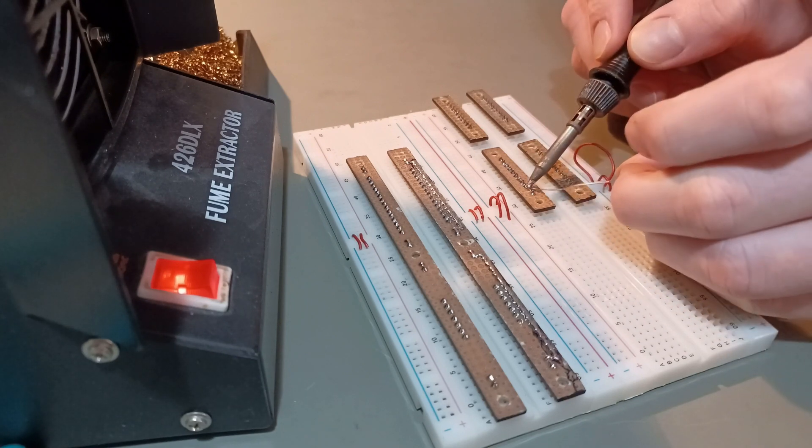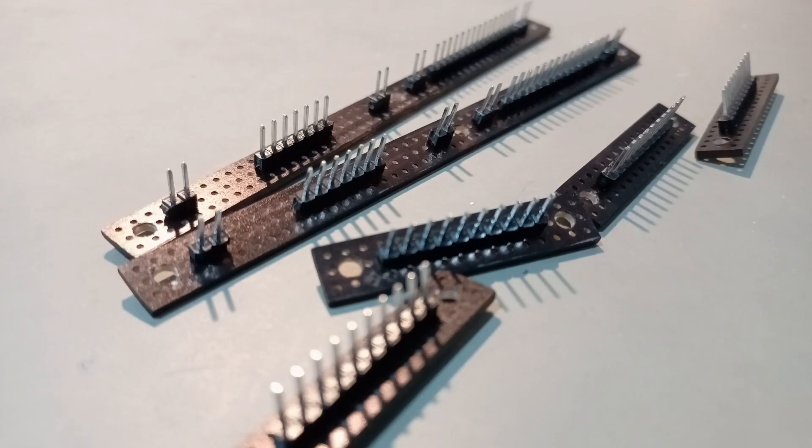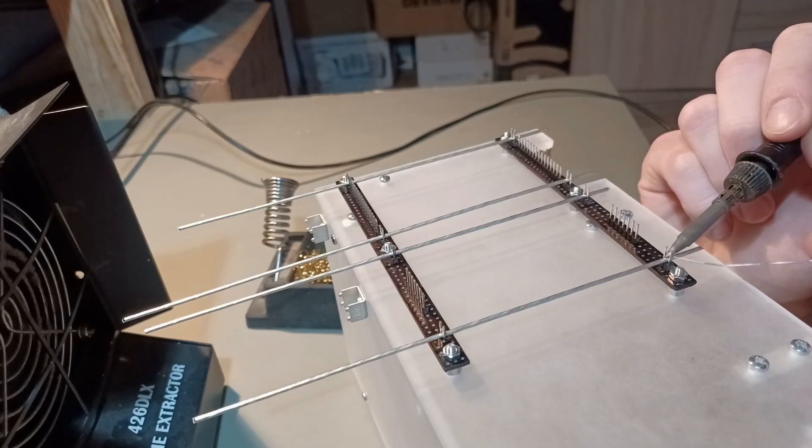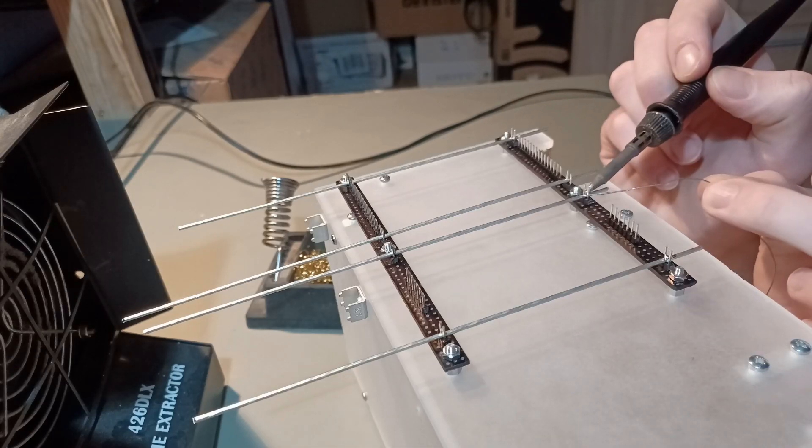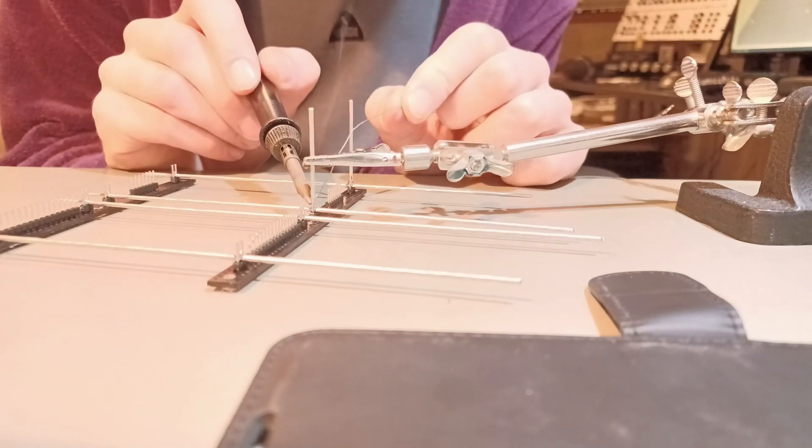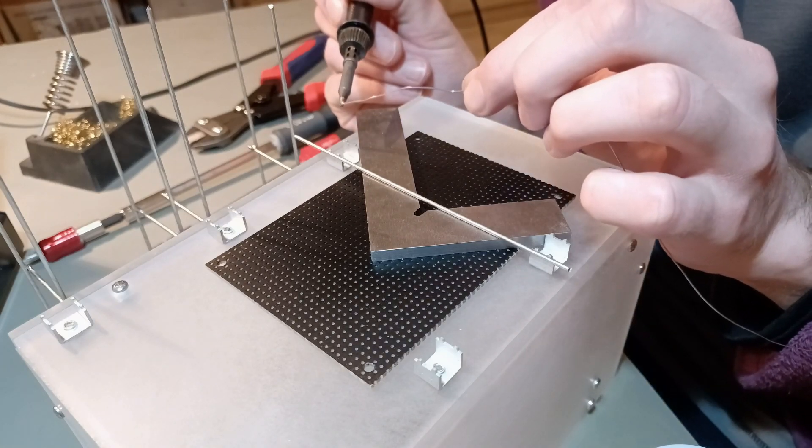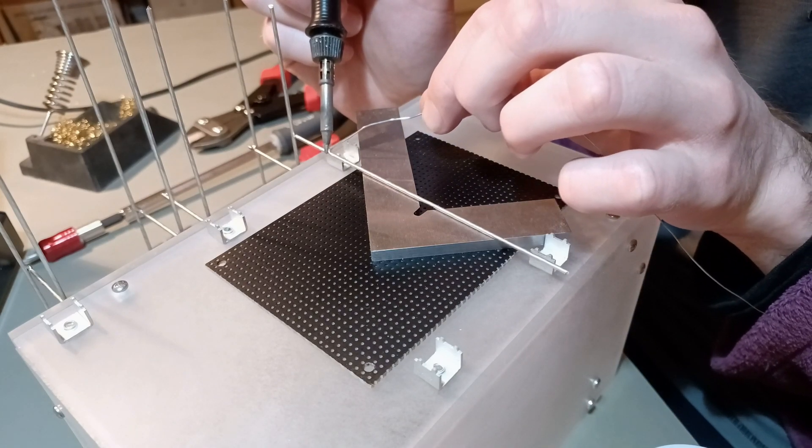I'm starting by soldering the pin headers to the perfboard that will hold everything in place. I'm continuing by soldering together the scaffolding with 14 American wire gauge, tinned copper wire. They'll make for a rigid enough construction to solder components to, but they're also acting as common ground across the entire circuit.